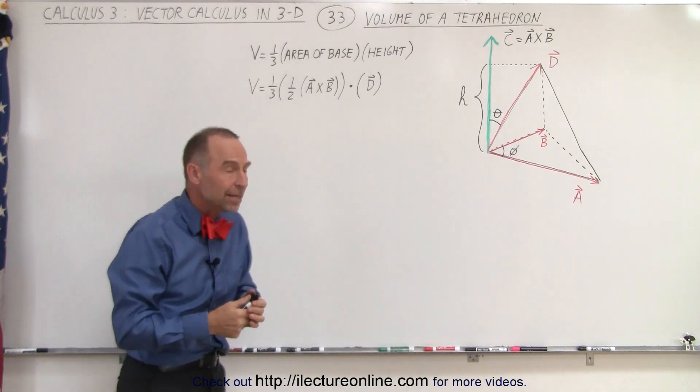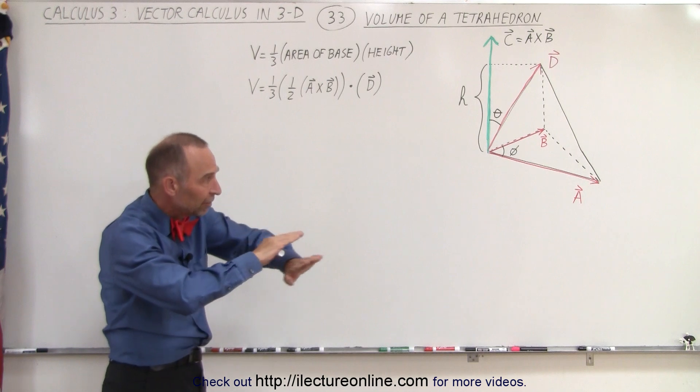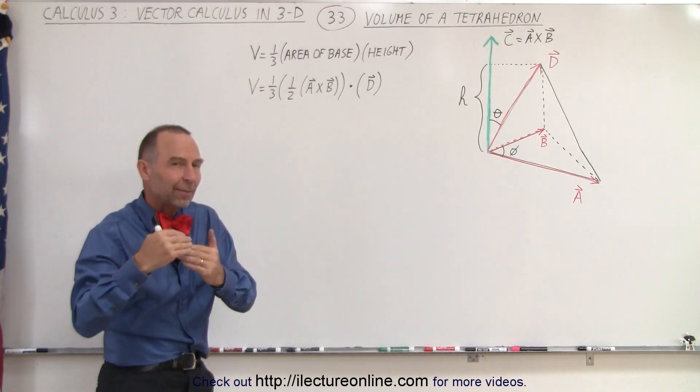So we go A cross B, take half of that, that'll give us the area of the base, and then we'll multiply that times the height.